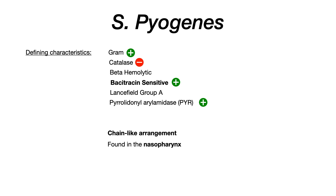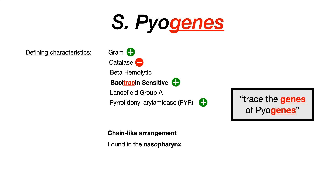Here's a mnemonic: Strep pyogenes has the word 'genes' in the name. Think of tracing the genes of pyogenes — and trace stands for bacitracin. So tracing the genes of Strep pyogenes tells you it's bacitracin sensitive. This can literally be the difference between getting a board exam question correct versus incorrect.